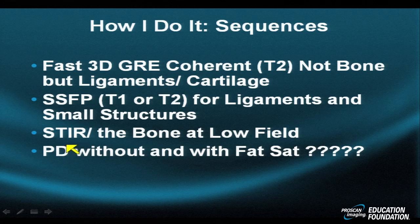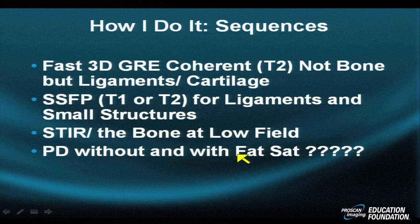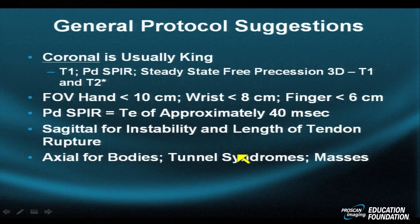The proton density image uses a long TR and short TE and is not commonly used alone in musculoskeletal MRI. However, when you take a proton density image — which has very high signal-to-noise and looks like a T1-weighted image — and apply a quality fat suppression sequence, you get the proton density fat suppression image, or PD SPIR. This transforms a sequence of limited standalone utility into one of the most valuable, versatile, and sensitive sequences in all of musculoskeletal MRI.